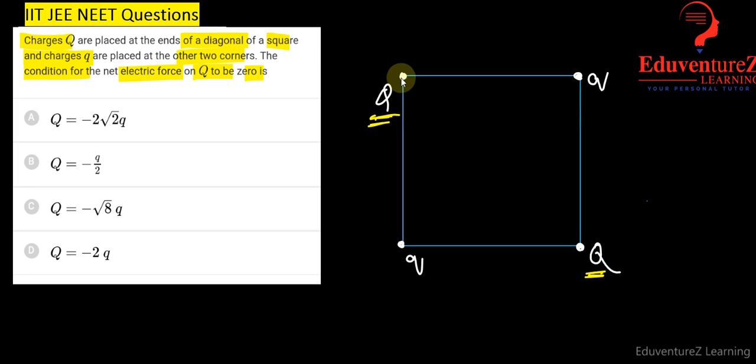Both will repel each other like this. So this one is force F1. If small q is positive, small q is positive, then small q will repel like this and this small q will repel like this. So there is no any chance that the forces will cancel out each other.